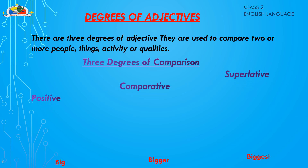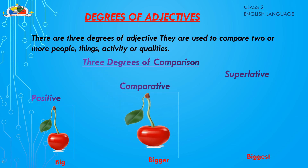When we say 'this cherry is bigger than the first cherry,' we are comparing the second cherry in terms of size. Since we are making a comparison between two cherries, it is a comparative degree. When we say 'this is the biggest cherry of all,' we are comparing its size with all the cherries — and since we are comparing more than two cherries, it is a superlative degree.